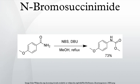Hofmann rearrangement: NBS, in the presence of a strong base such as DBU, reacts with primary amides to produce a carbamate via the Hofmann rearrangement.